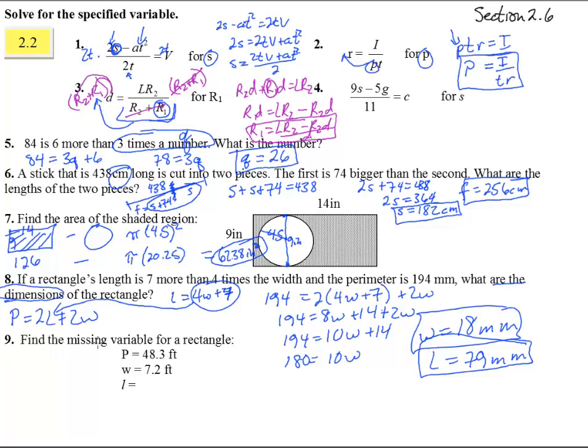And number 9, the last one here. Find the missing variable for a rectangle. The perimeter is 48.3 feet, so we can just use this formula as we wrote it up here. 48.3 feet equals 2L, which we don't know, plus 2W, which is 7.2. So 48.3 equals 2L plus 14.4. Subtract 14.4 from both sides, and we get 33.9 equals 2L.